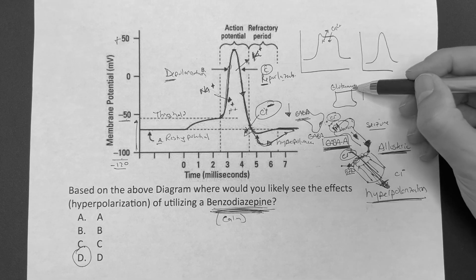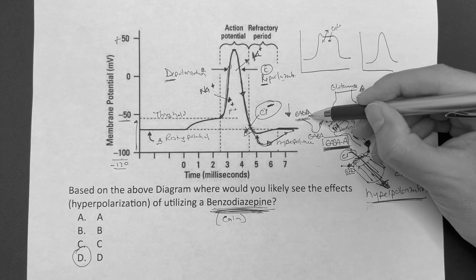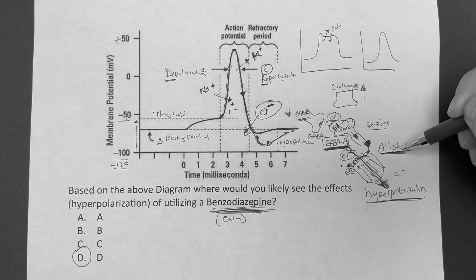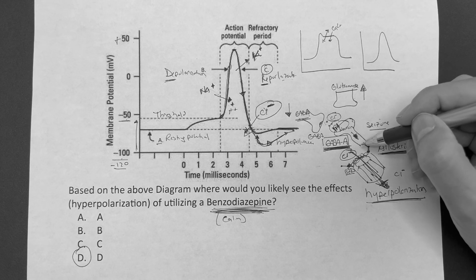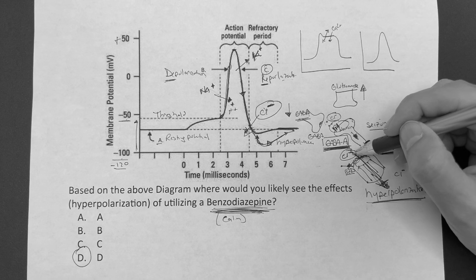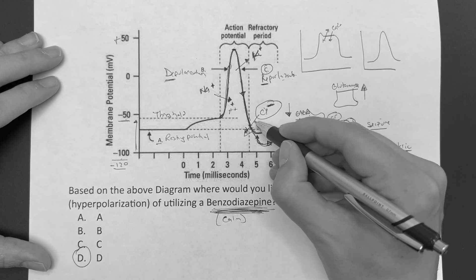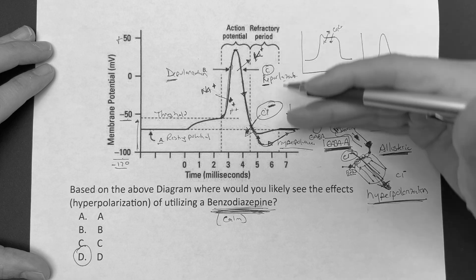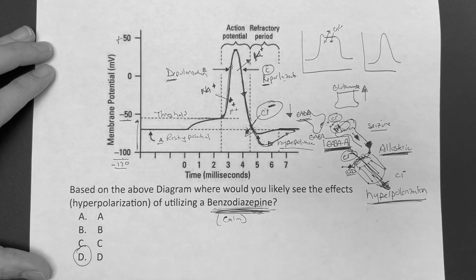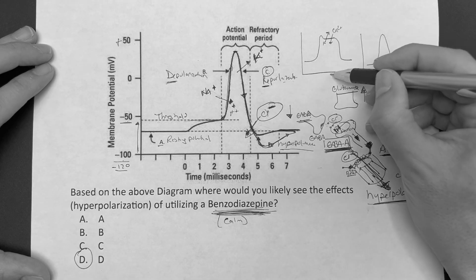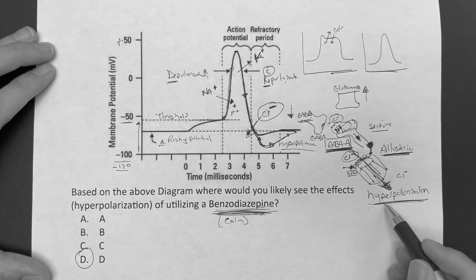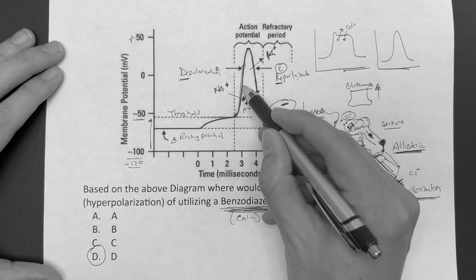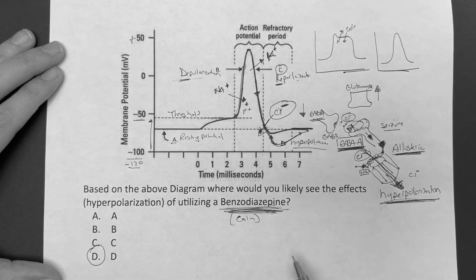You need to know the basic mechanism: glutamate is more activating, GABA is more inhibitory, and benzodiazepines work at the GABA-A receptor with an allosteric effect. They increase the frequency of chloride ion channel opening. Chloride is negative, so more chloride creates more hyperpolarization — keeping things calmer because the cell can't reach threshold as easily. Make sure you review the cardiac videos too. Hope it was helpful, guys.